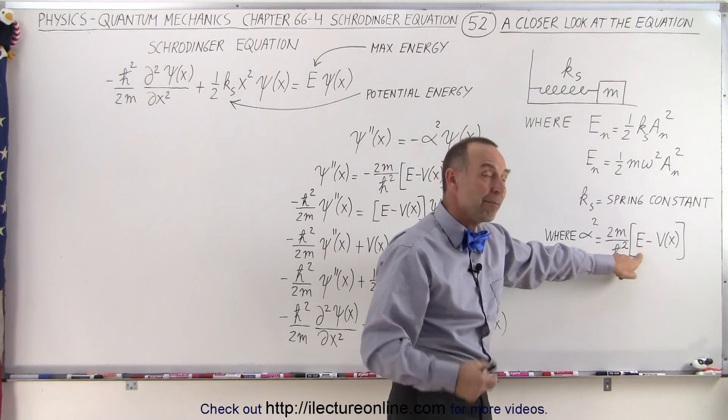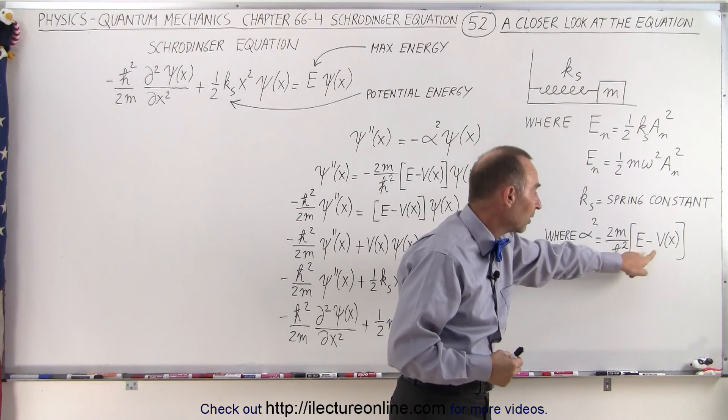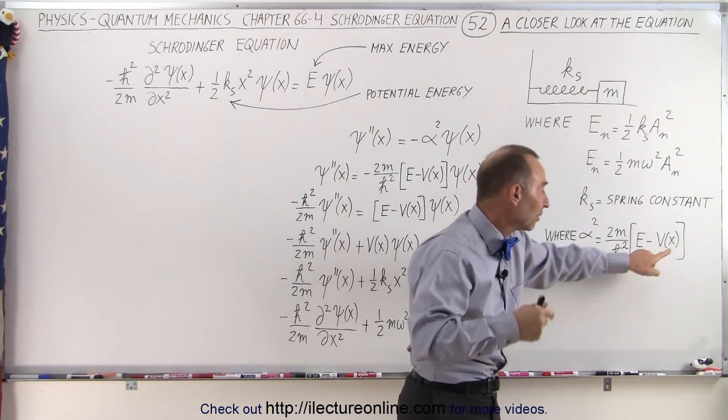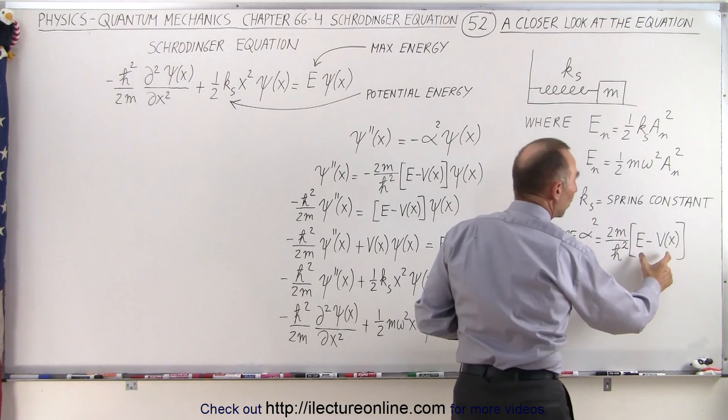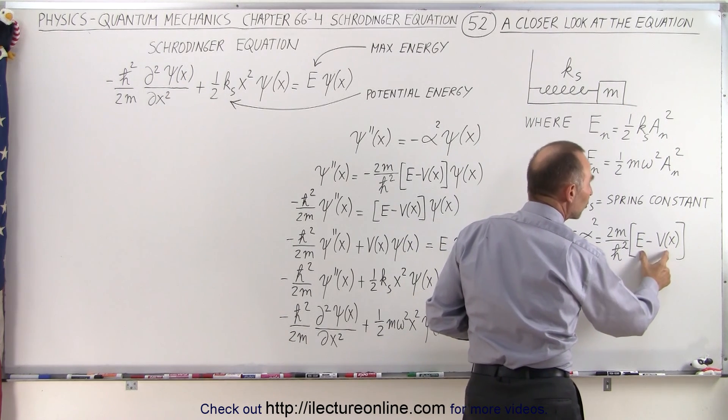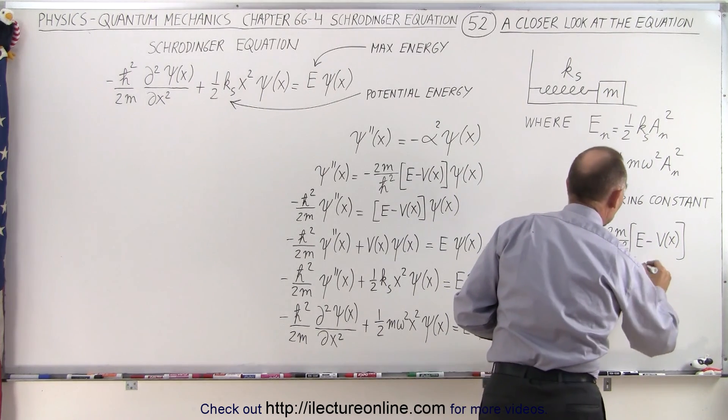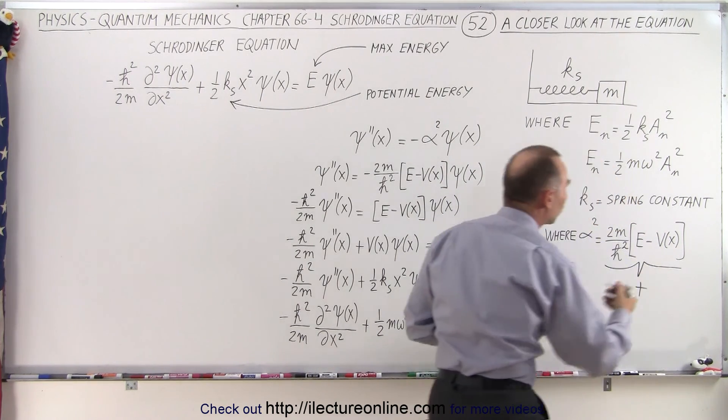Now since E is always the maximum energy of the oscillator and V is going to be the potential energy anywhere along the path of oscillation, this will always be equal to zero or a number larger than zero, never smaller than zero. So this quantity is essentially always positive or zero.